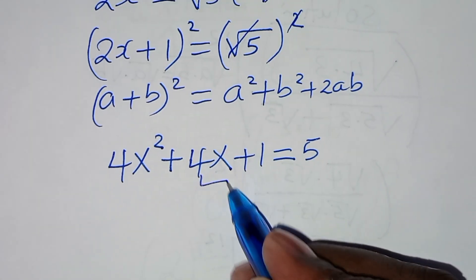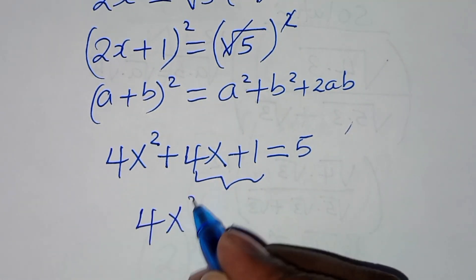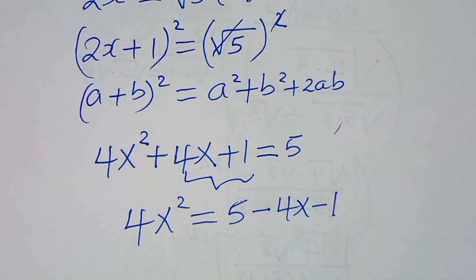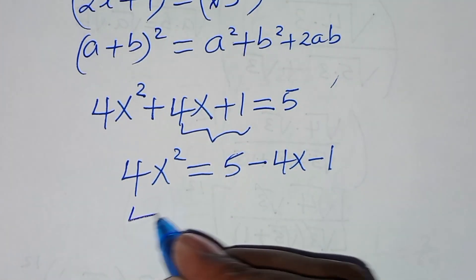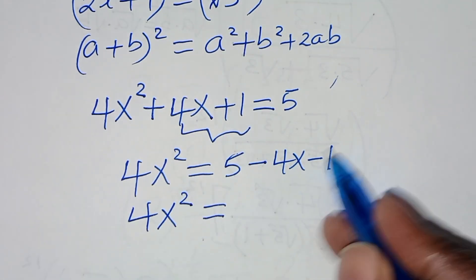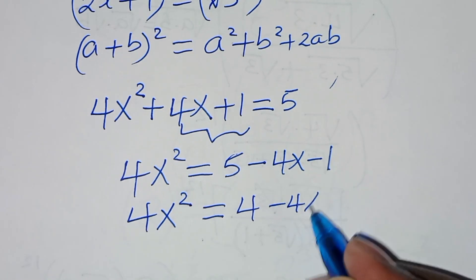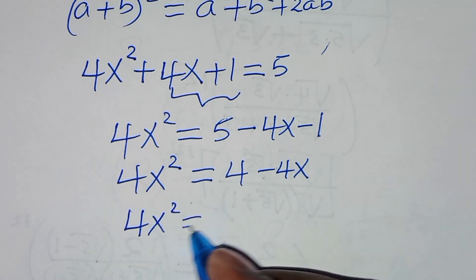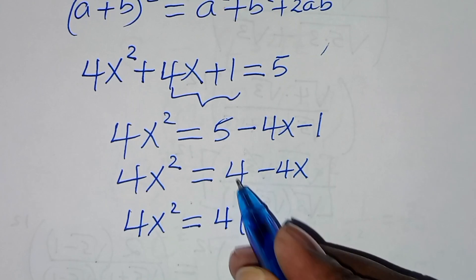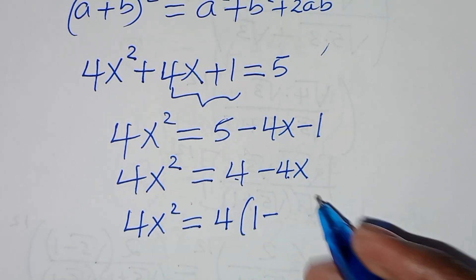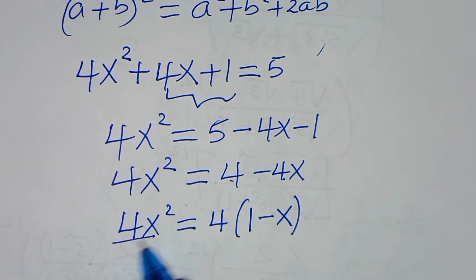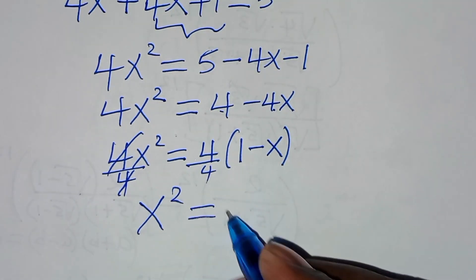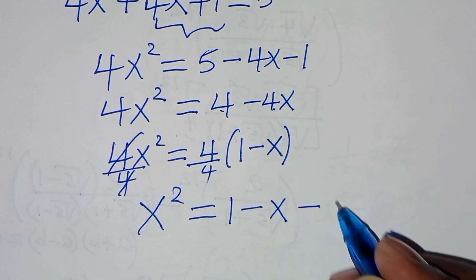Taking 4x plus 1 to the right-hand side gives 4x squared equals 5 subtract 4x subtract 1, which is 4 minus 4x. We factor out 4, giving 4x squared equals 4 times 1 minus x. Dividing both sides by 4, we get x squared equals 1 minus x. Let's call this equation 2.